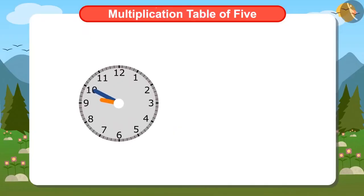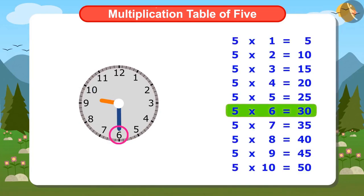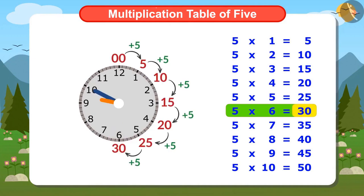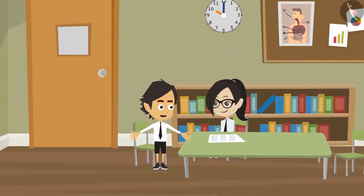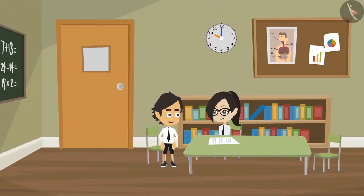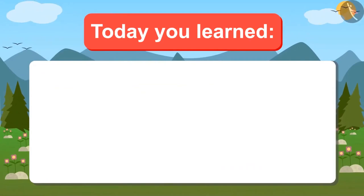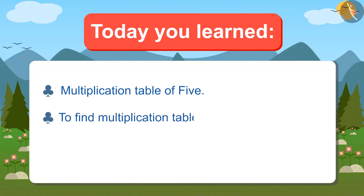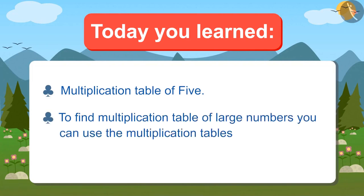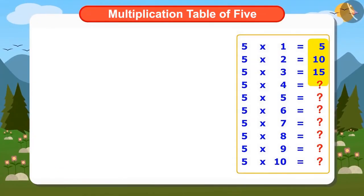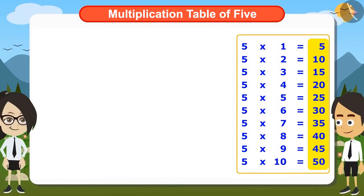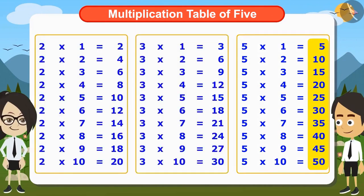Now look at the clock. When the minute hand is at 6, reading the multiplication table of 5 till 6 will tell that it is 30 minutes. And when it's on 9, it will be 45 minutes. This is the right way to read time. Today we have learned the multiplication table of 5. And we also got to know that to find the multiplication table of large numbers, you can use the multiplication table of small numbers, just like Vandana used the multiplication tables of 3 and 2 to find the multiplication table of 5.